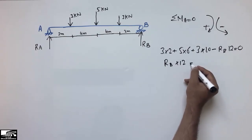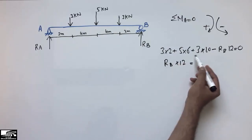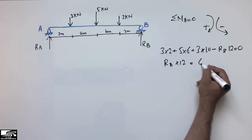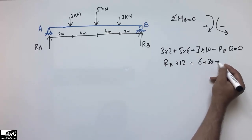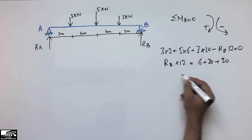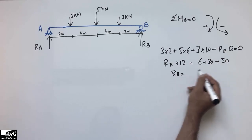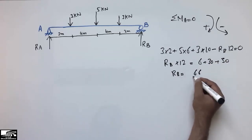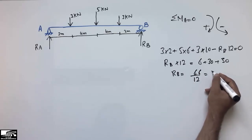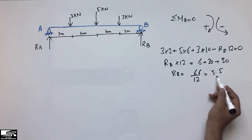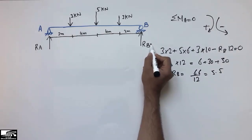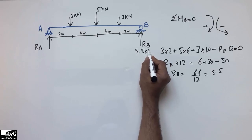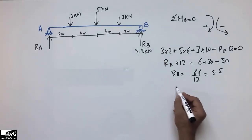Adding all the values: 3 into 2 is 6, 5 into 6 is 30, and 3 into 10 is 30. Adding these values gives 66, and dividing by 12 gives 5.5. So the RB value is 5.5 kN.